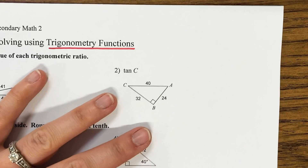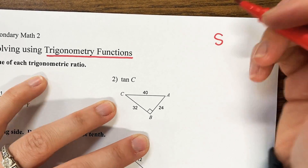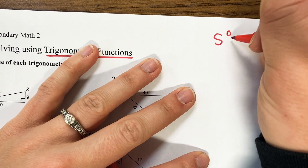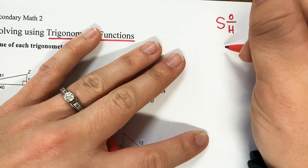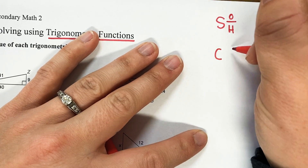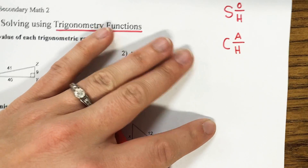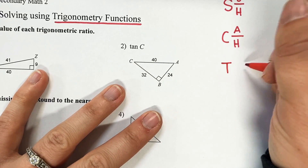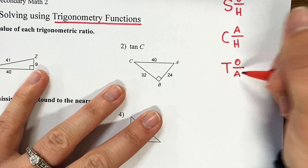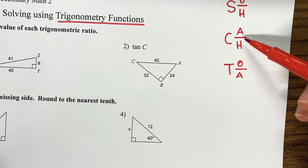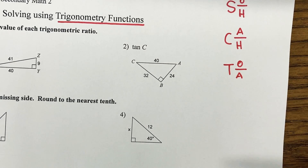Let's make this note on the side of our paper. We have S for sine, and that goes with opposite over hypotenuse. We have C for cosine, and that goes with our adjacent over hypotenuse. And we have T for tangent, and that goes with our opposite over adjacent. Remember, think SOH-CAH-TOA. I know, super annoying, but it helps you remember it.